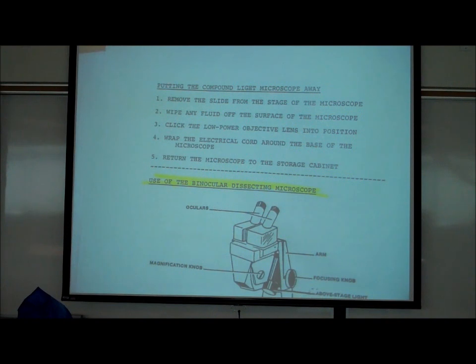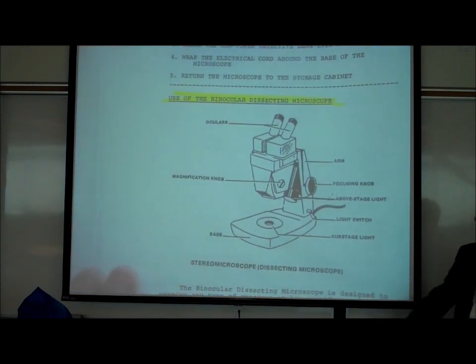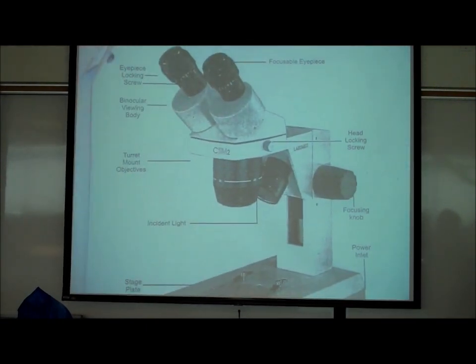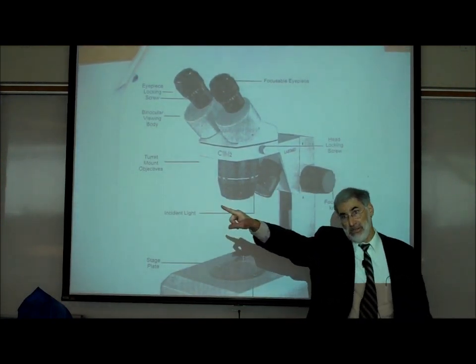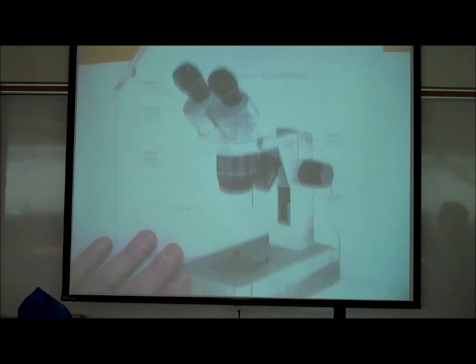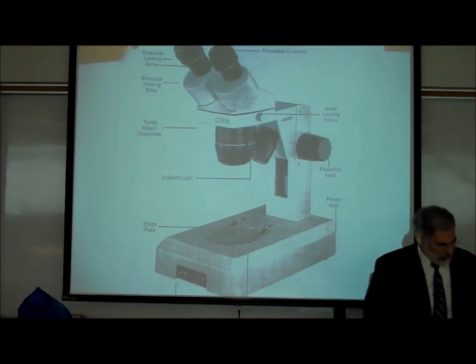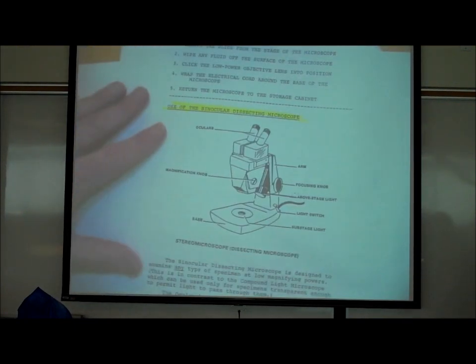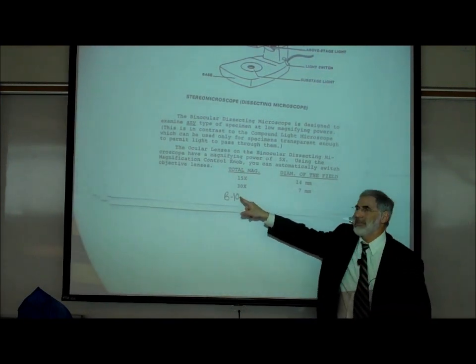A binocular dissecting microscope is a different kind of microscope. You have a picture of it here, and another on the next page. This microscope only magnifies 15x and 30x, while the microscope in front of you magnifies up to 1,000x.